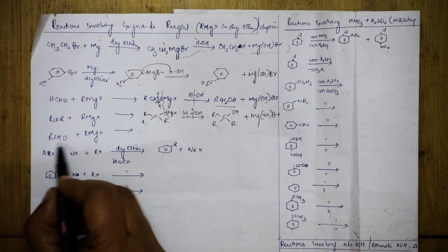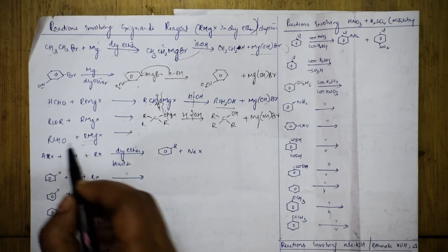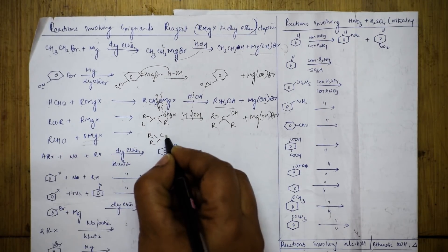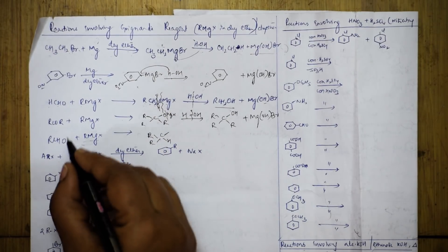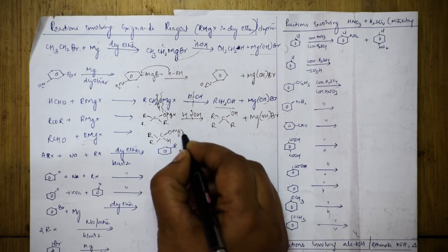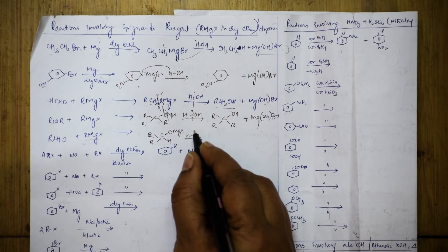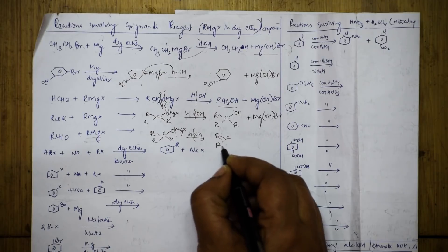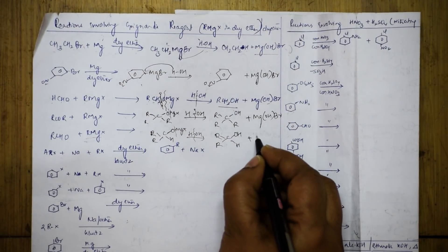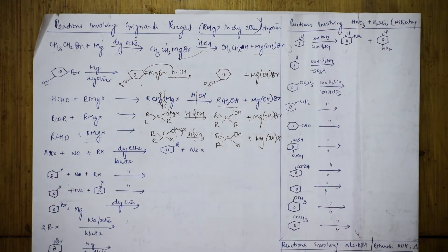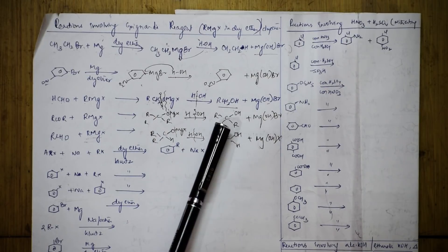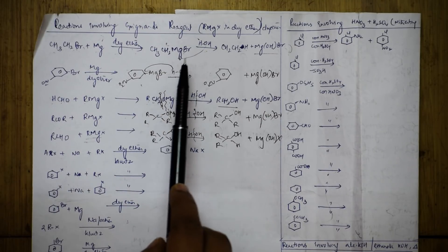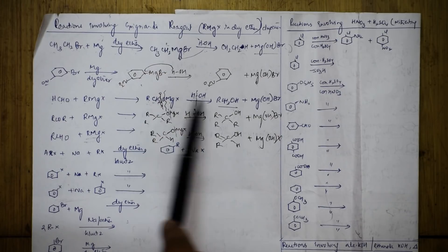Once again, let us try - this is aldehyde, this is again Grignard's reagent. I need to add the whole thing. Your R is here, your carbon is here, one more alkyl group, your hydrogen is here. To this oxygen, MgX is added. When I hydrolyze, I break this bond - I get R, C, R, OH, H plus MgOHBr or MgOHX. Always add the whole thing and hydrolyze it.